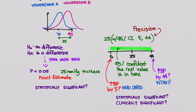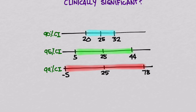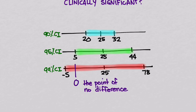Now let's look at the different kinds of confidence intervals you can get. The more confident you want to be about something, the bigger the interval you're going to have. If you're willing to be less confident, you can have a smaller interval. For a 99% confidence interval, the point of no difference — that is, a value of 0 — is included. So you cannot say with 99% confidence that there is a difference between vasopressor A and vasopressor B, because the value could be 0, or even negative 5, meaning vasopressor A could actually do better than vasopressor B.